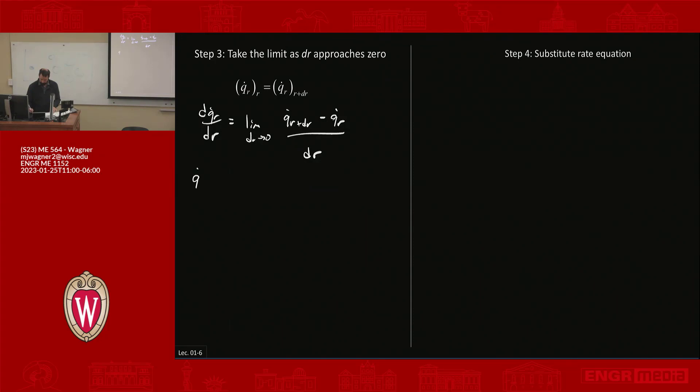That gives us Q dot R plus DR equals Q dot at R plus DQ dot R DR times DR. Physically, what this is saying is heat coming out equals heat that comes in plus any change in heat over that DR space.